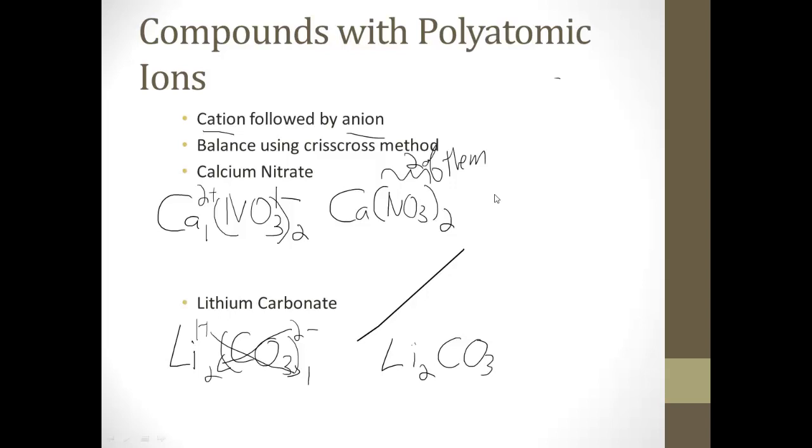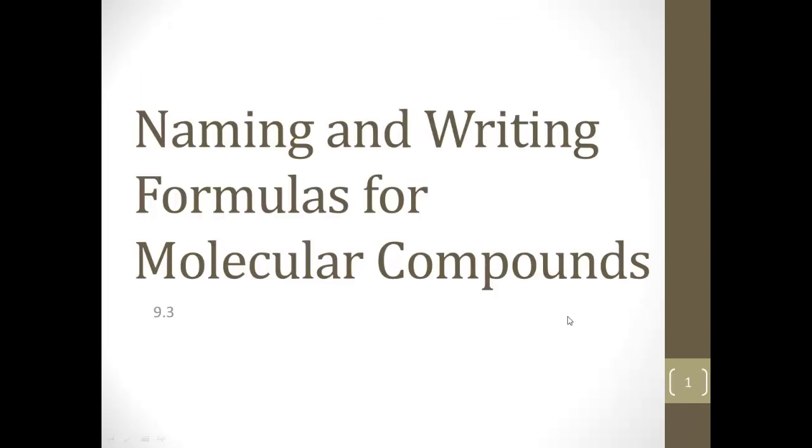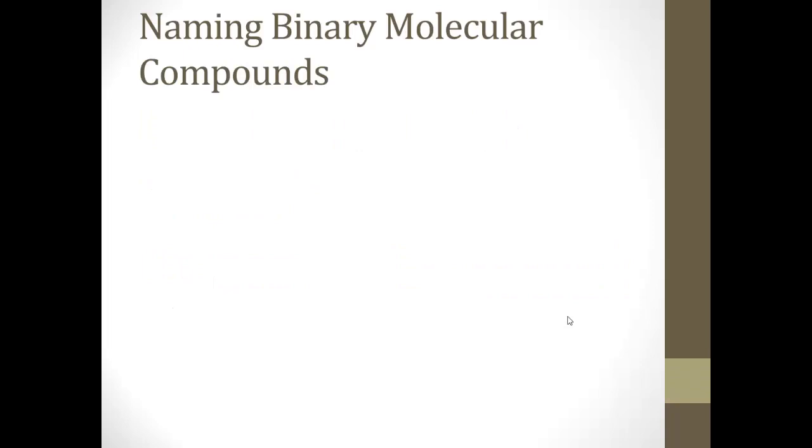We're going to continue with 9.3 just because it's also really short. Naming and writing formulas for molecular compounds. It makes a lot of sense to do this at the same time as the ionic because it's almost the same, but it's really good to point out the differences. Naming binary molecular compounds.